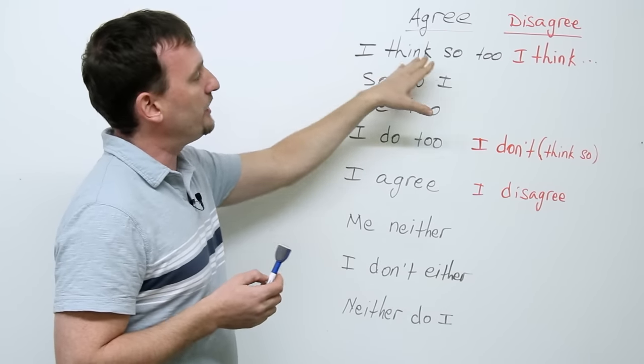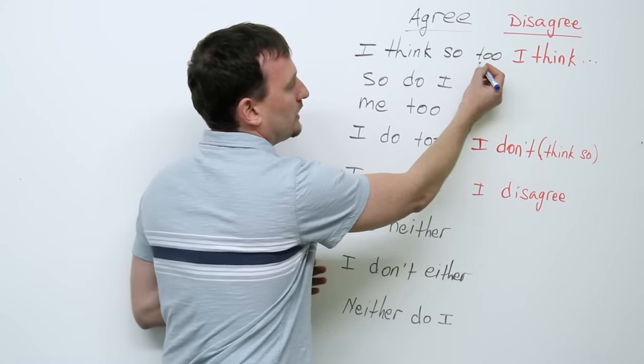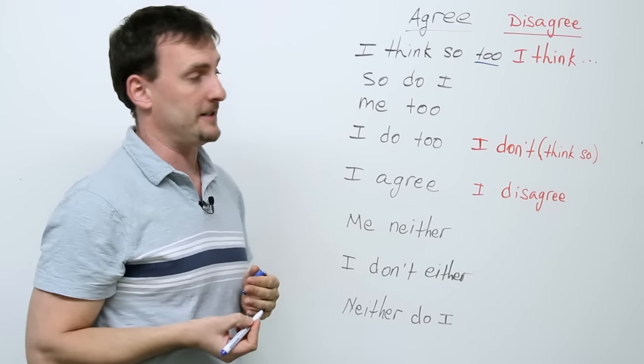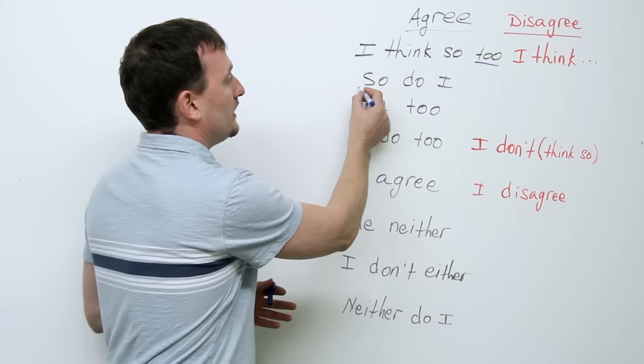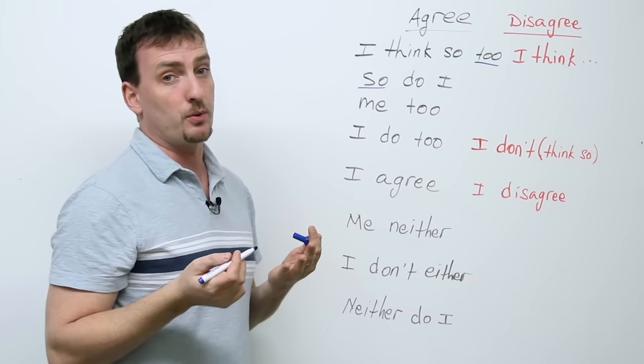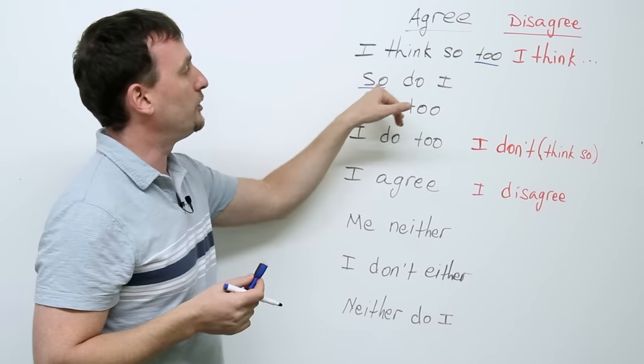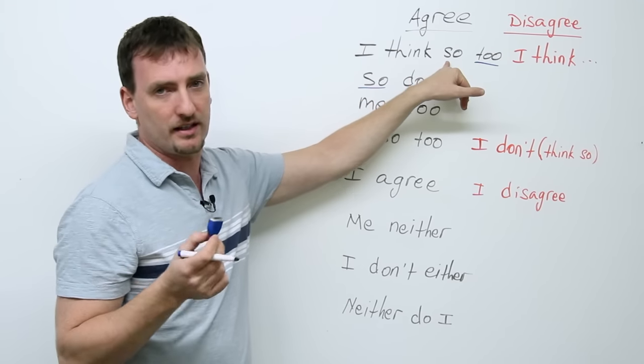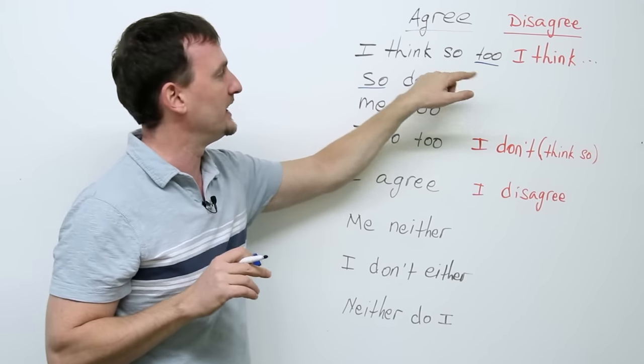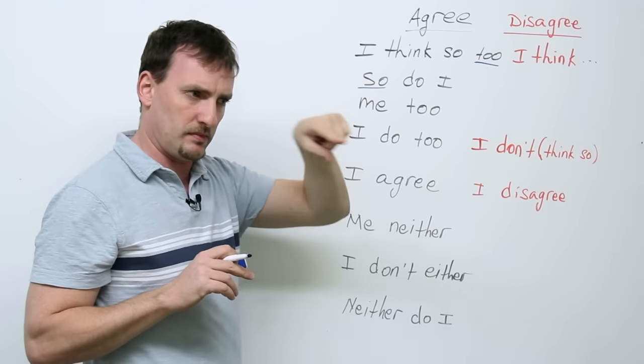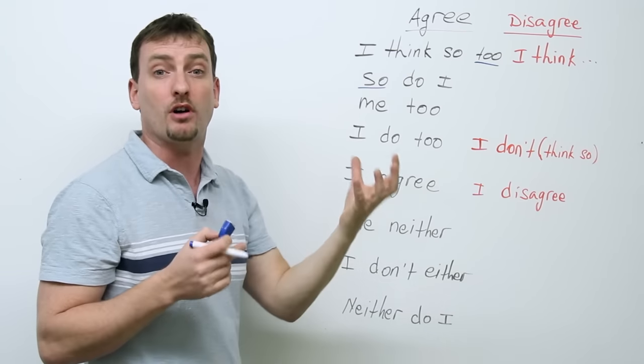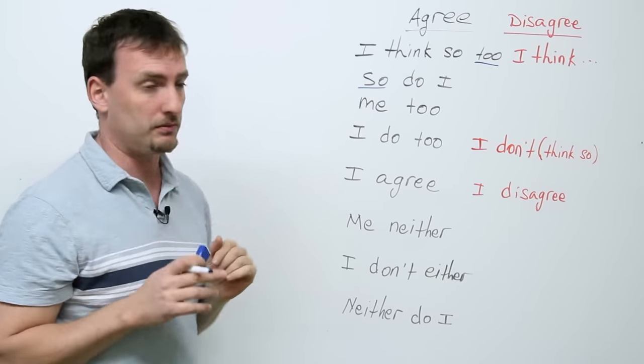So first, I think so too. Too is a word used to agree. So do I. So is also a word used to agree. You have to be careful not to mix. This so and this so are two different words. This so means pointing to something, the thing that we're talking about, okay? So don't mix the two.